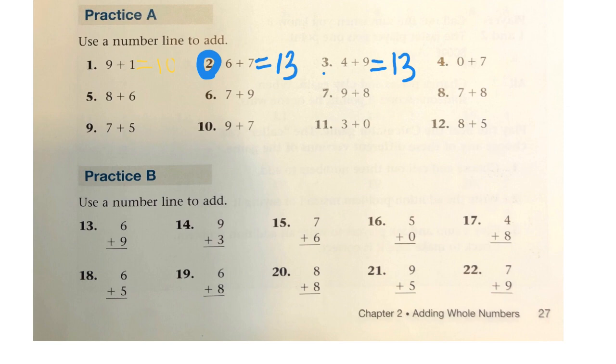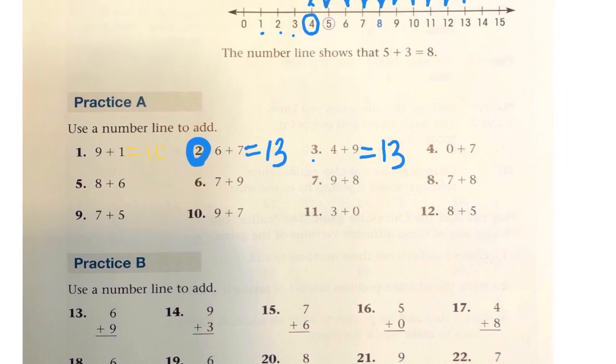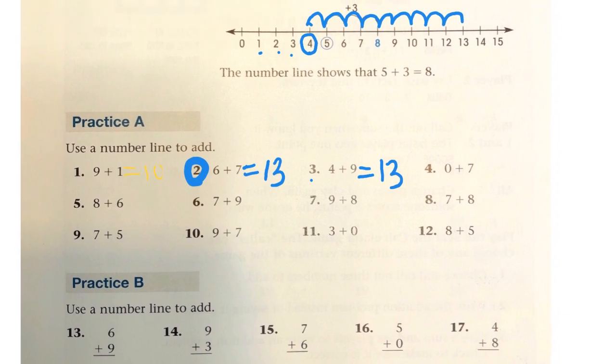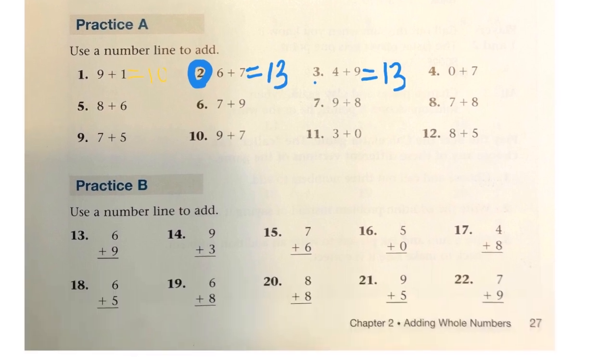So we have 6 plus 9. We can get it almost there. So erase, erase, erase. So starting at 6 this time, and then moving 9 spaces to the right. 1, 2, 3, 4, 5, 6, 7, 8, 9. 6 plus 9 is 15. So there we go, 6 plus 9 is 15.